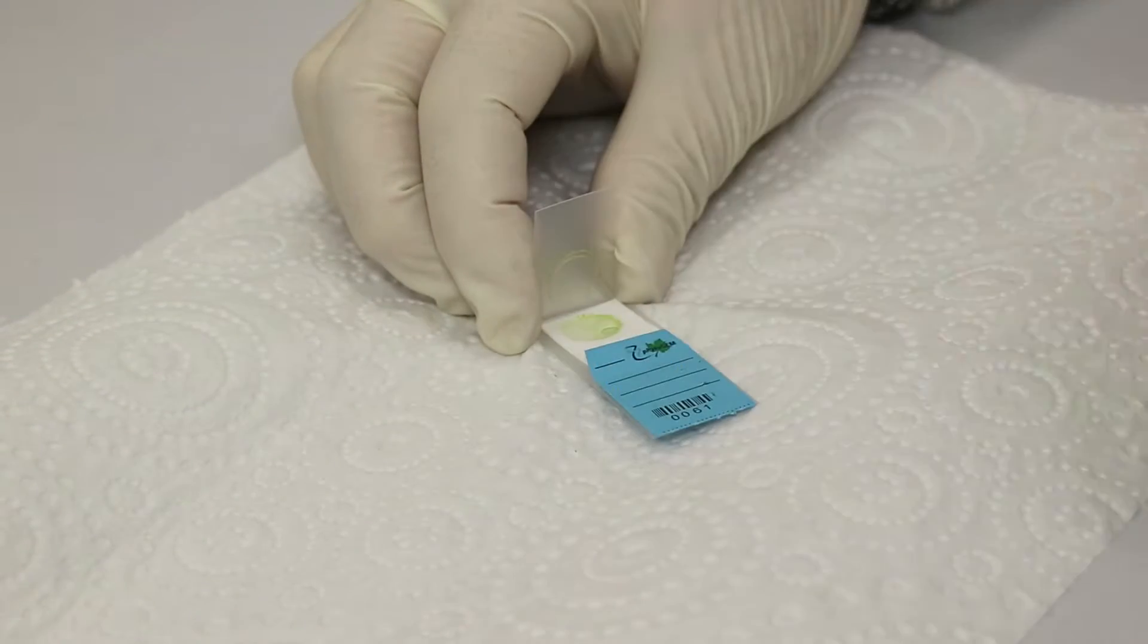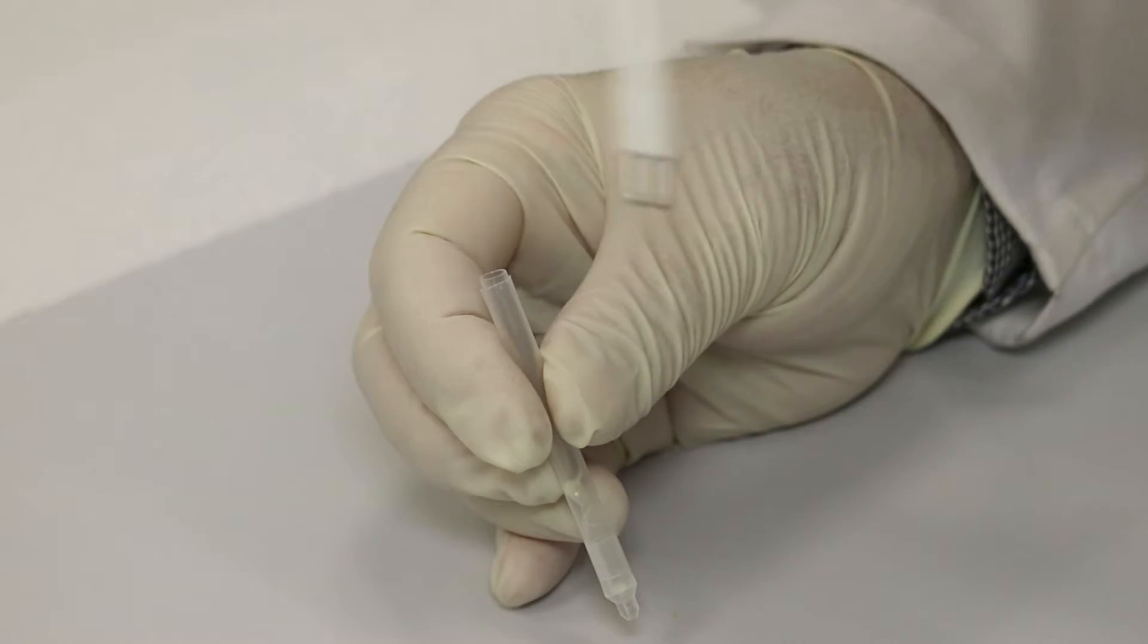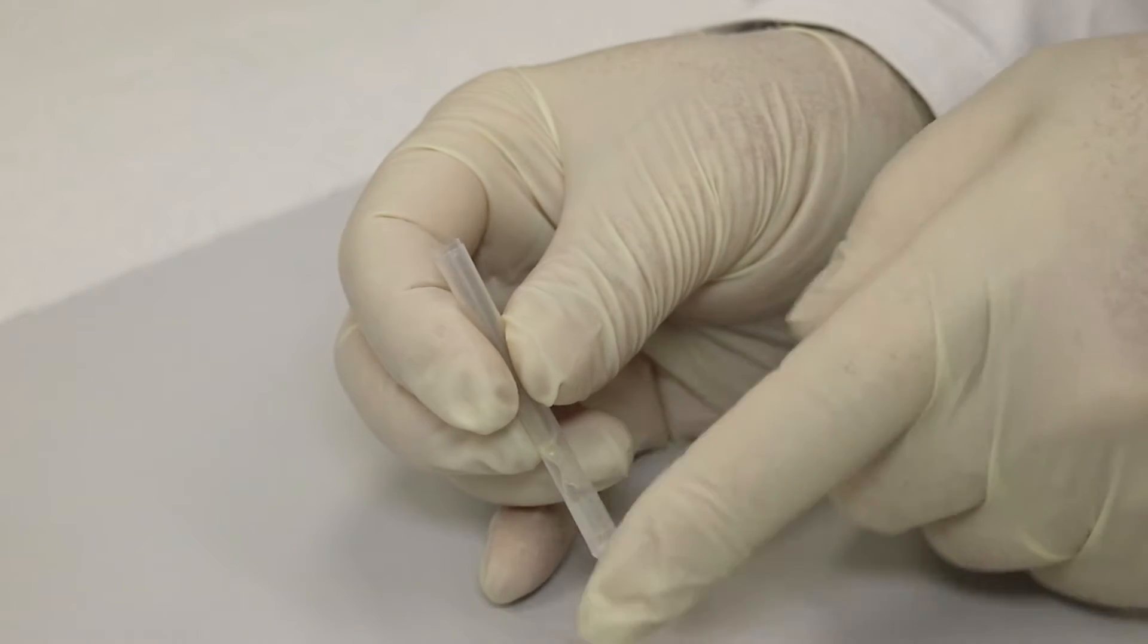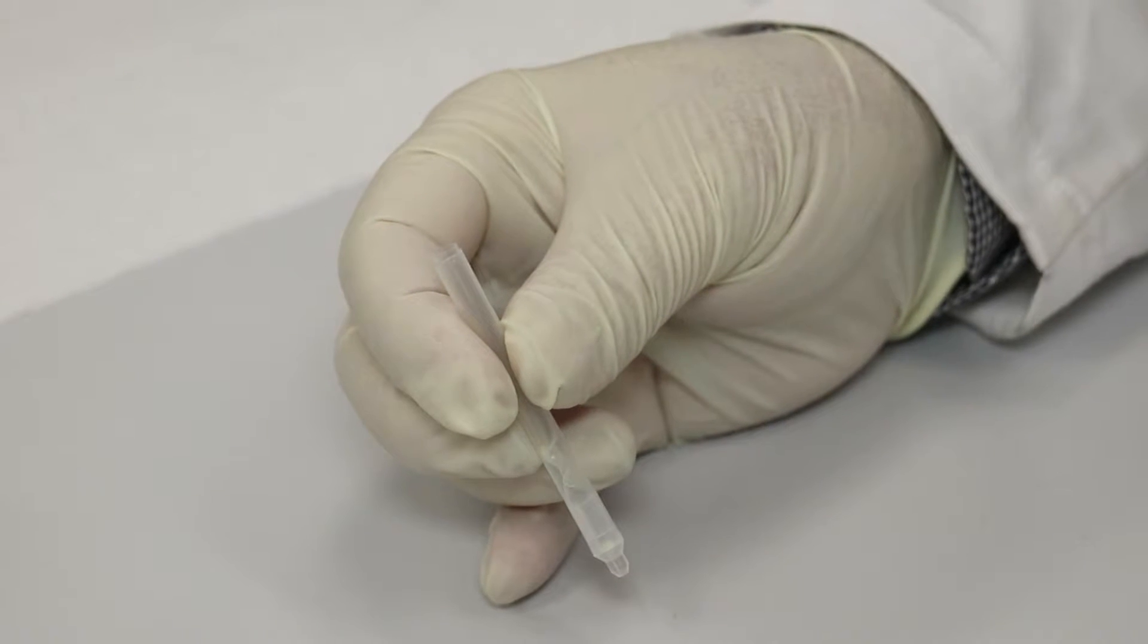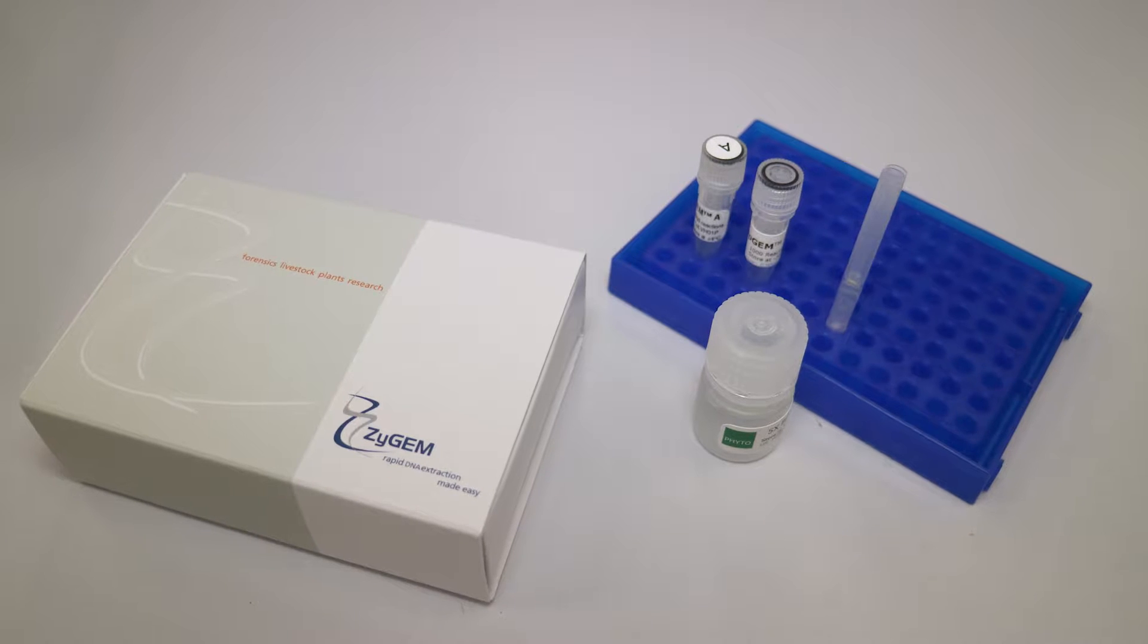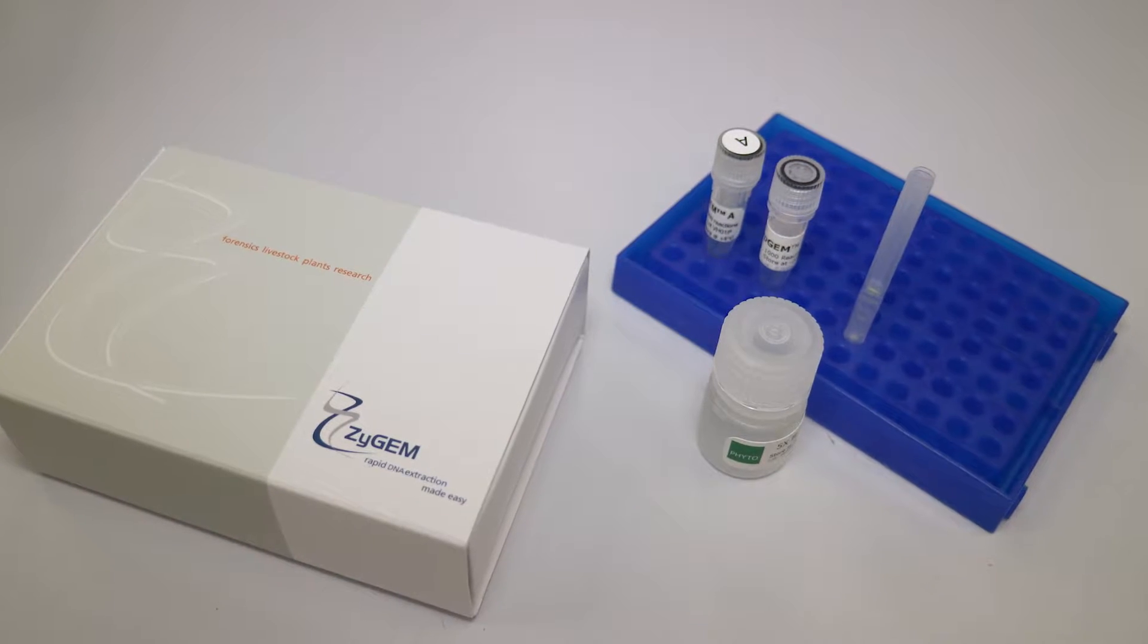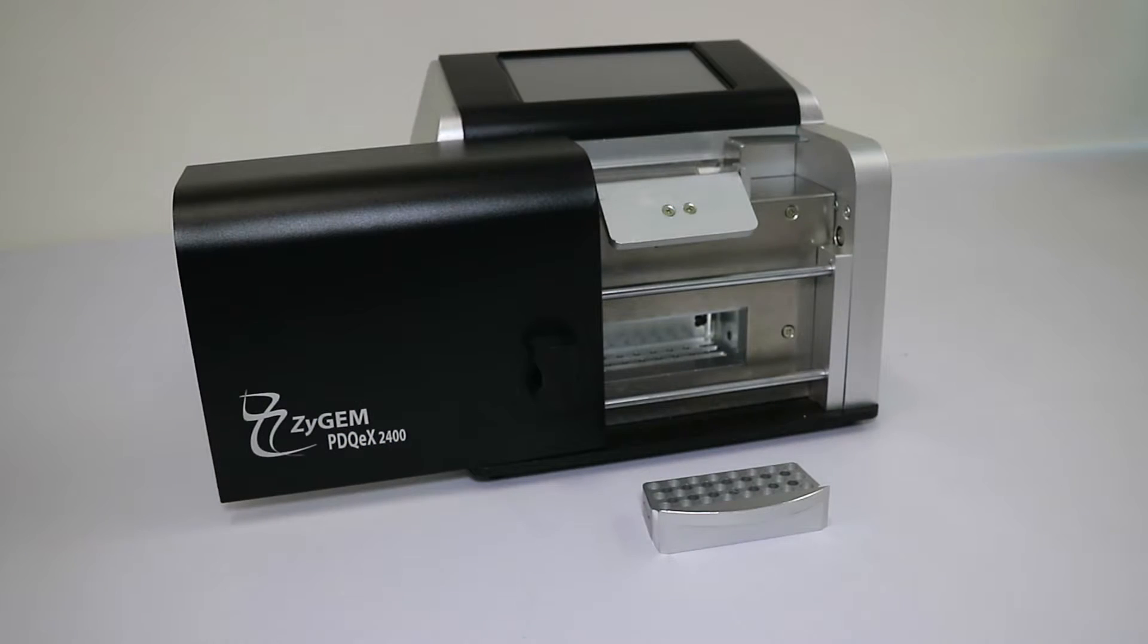Portions of the card are taken using the punches provided with the Phytogem kit. One or more punches are placed into the PDQX extractor tube. The Phytogem reagents are a unique mixture of glycosyl hydrolases and proteinases that rupture the cell walls, releasing the DNA and digesting nucleosomes and nucleases.